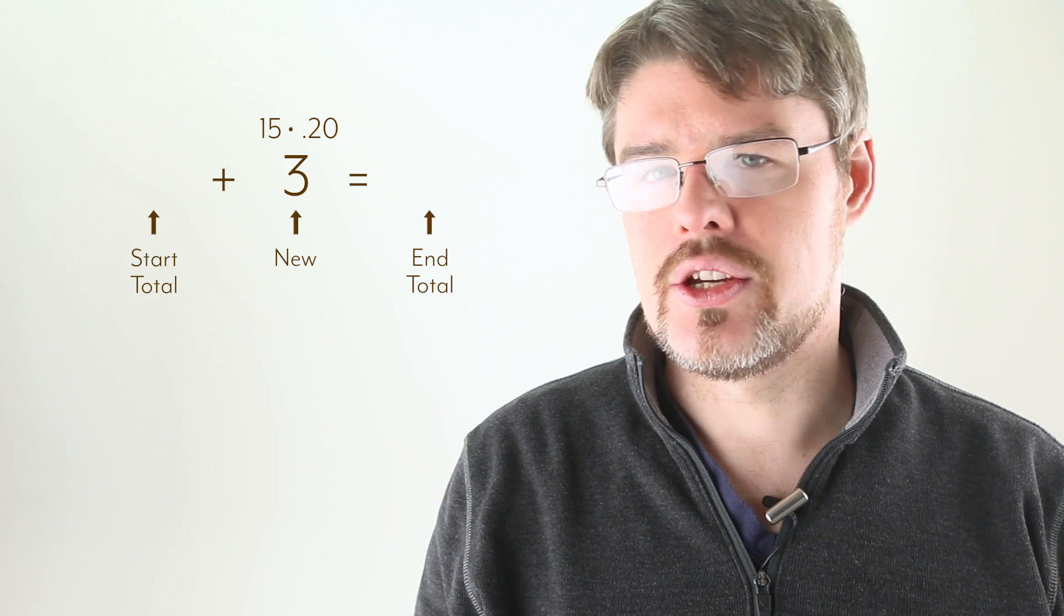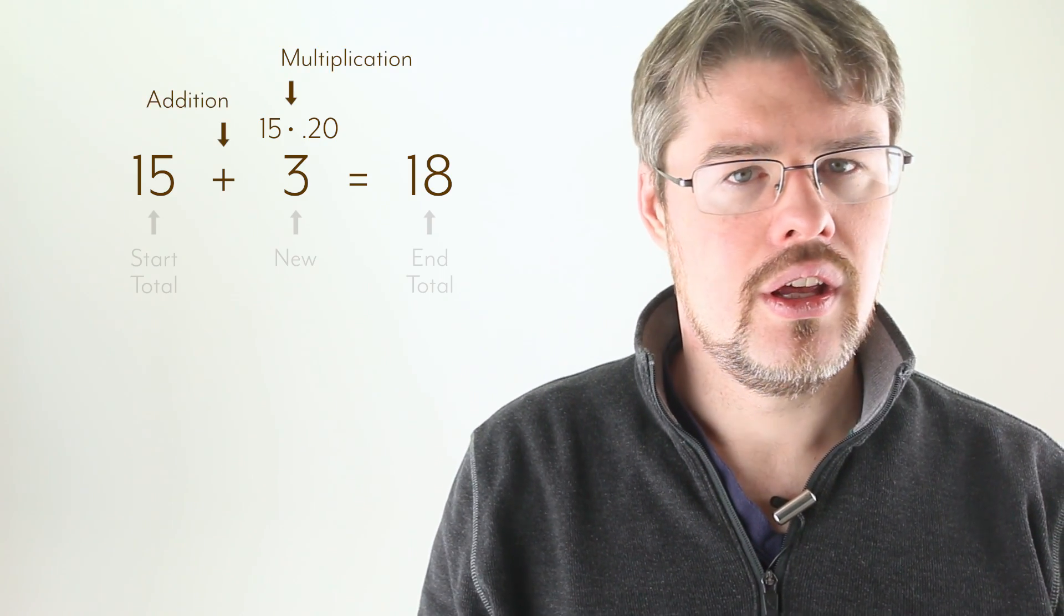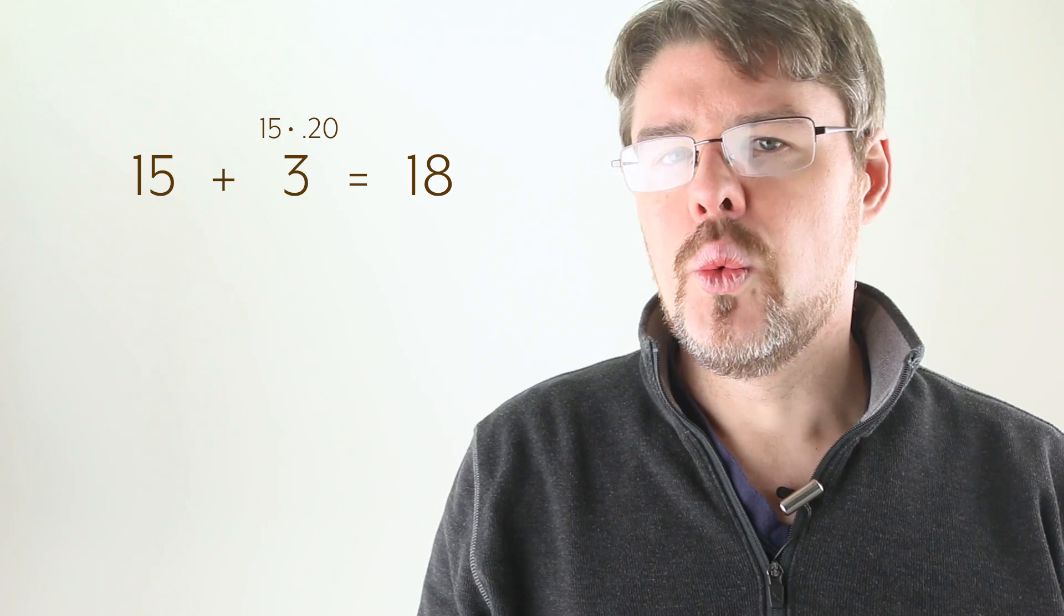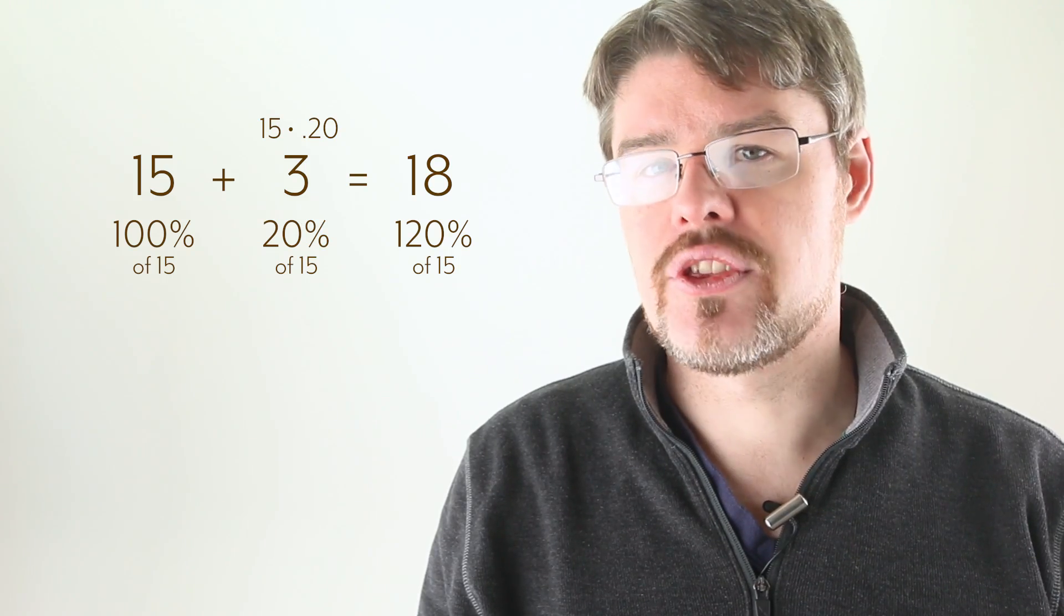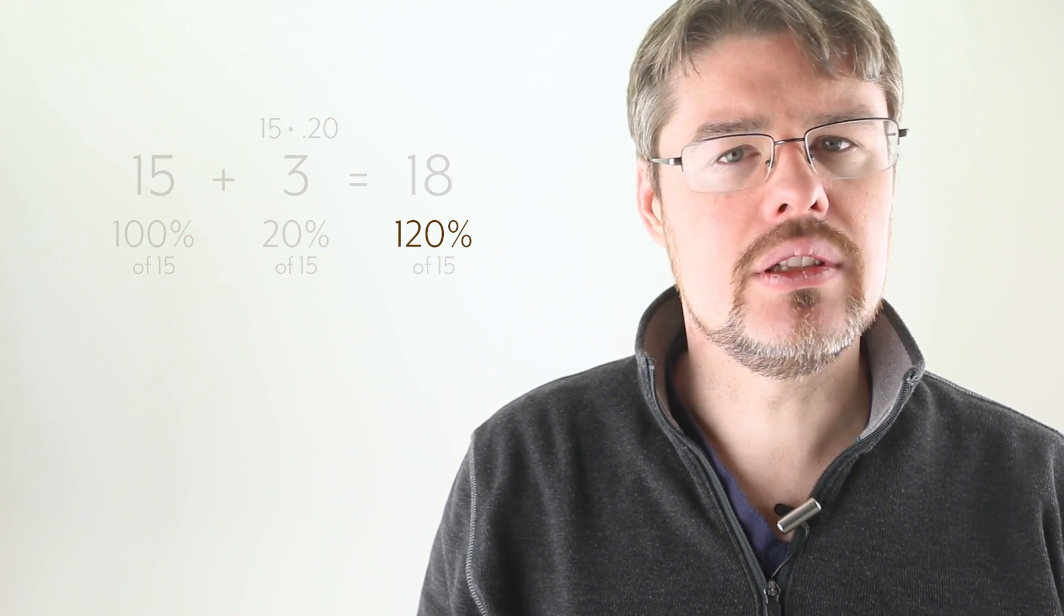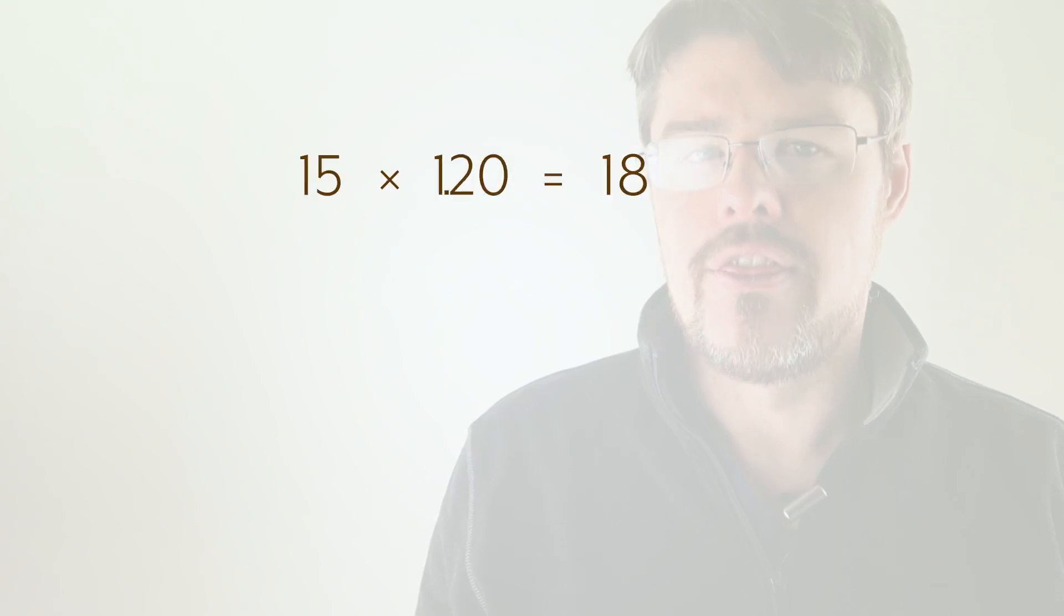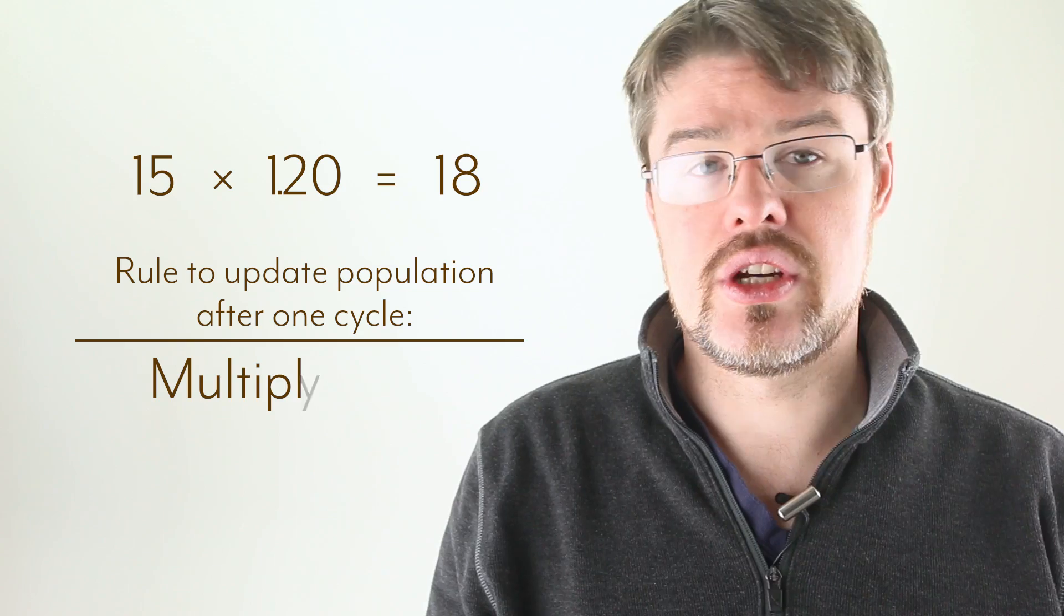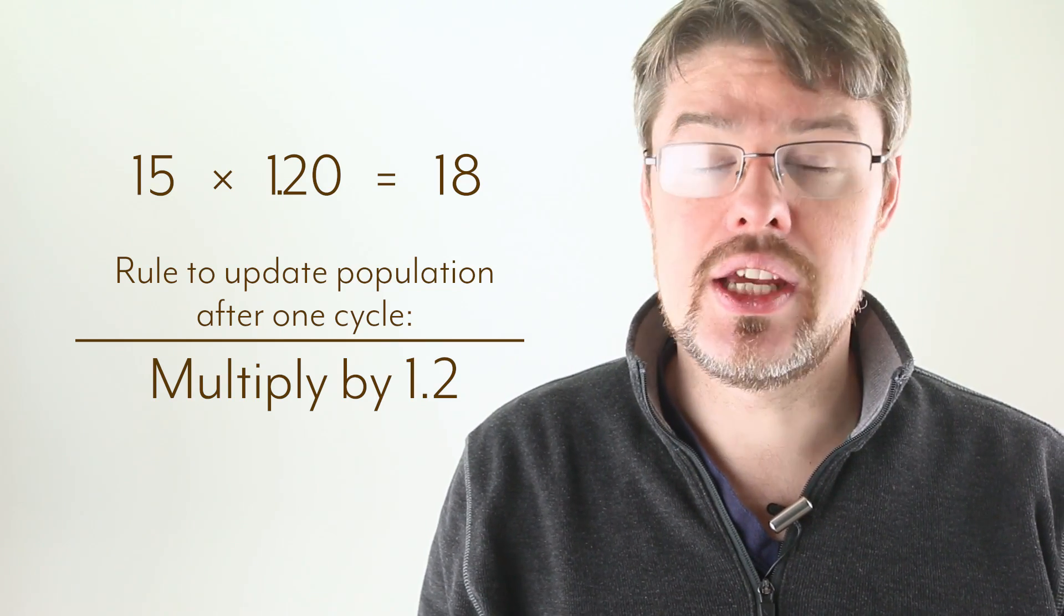This tells us how much the population increased during that one cycle. To find the new population overall, we're going to add this to the population we started with. This isn't too terrible of a process. One multiplication and one addition. But let's see if we can't simplify it down to a single multiplication. What we now have is 120% of 15, the 100% we started with, and the 20% more after the cycle. Can we just turn 120% into a decimal? Sure. Just move the decimal over by 2 again, which, remember, is just dividing by 10 twice, and you get 1.2. Now we multiply, and boom, we get the same number of rabbits, 18.